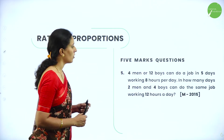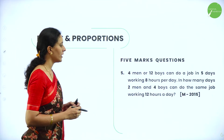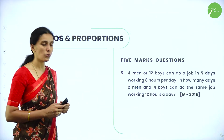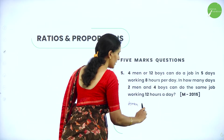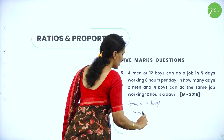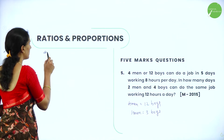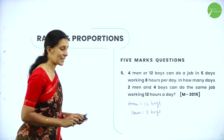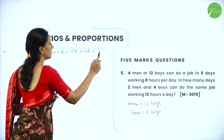Next question: 4 men or 12 boys can do a job in 5 days working 8 hours per day. In how many days can 2 men and 4 boys do the same job working 12 hours a day? Since 4 men equals 12 boys, that means 1 man equals 3 boys. Therefore 2 men and 4 boys equals 2 threes are 6 boys plus 4 boys equals 10 boys.